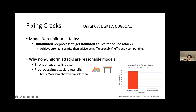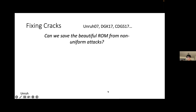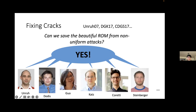We know there is a non-uniform attack, and this model gives a nice characterization of what preprocessing can do in the classical random oracle model. The question is: can we save the beautiful random oracle model from non-uniform attacks? Yes — for the classical setting, starting from the work by Unruh and then by Dodis, Guo, and Katz, and follow-up works by Coretti, Dodis, Guo, and Steinberger, they show tight characterizations of what we can do in the standard model with preprocessing.